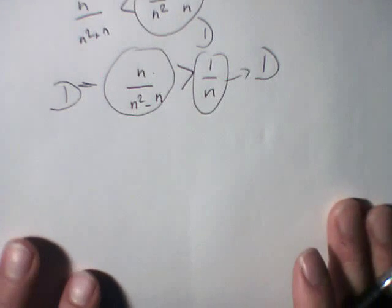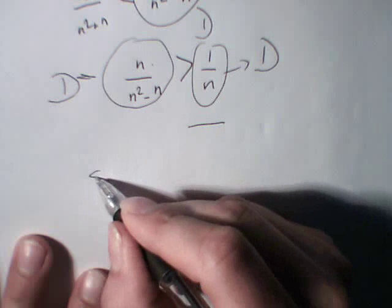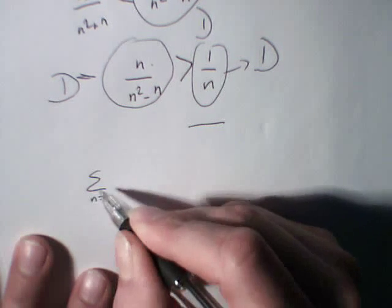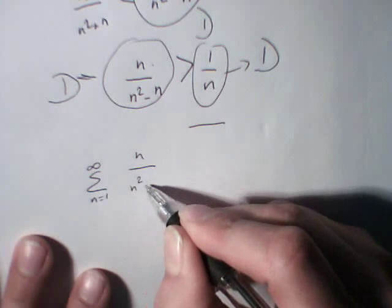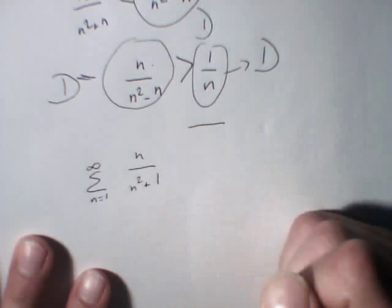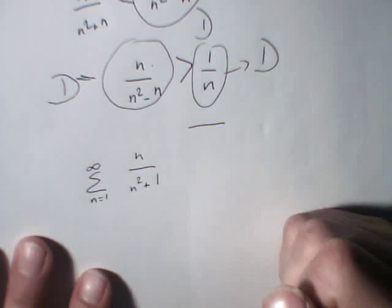But in our case, we don't know. So we need to do differently. So the sum from n equals 1 to infinity of n divided by n squared plus 1. What is it? Is it a convergent series or divergent?